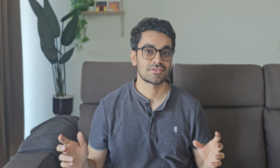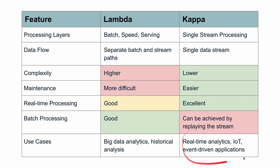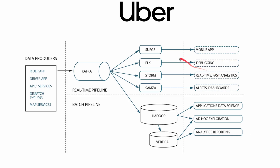Next is Kappa Architecture, which is a little different from Lambda. It has only one layer — instead of batch and real-time, it only has a real-time layer. If you want to do any batch processing, you do that by replaying events through message processing or queue systems like Kafka. Compared to Lambda, it has lower complexity, is easier to maintain, and has much better real-time processing support, but batch processing support is not as strong. Uber's core infrastructure is built on Kafka, functioning as a central nervous system for data management.